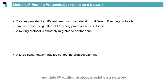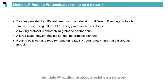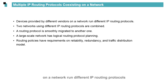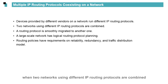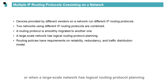In most cases, multiple IP routing protocols exist on a network. For example, when devices provided by different vendors on a network run different IP routing protocols, when two networks using different IP routing protocols are combined, when a routing protocol is smoothly migrated to another, or when a large-scale network has logical routing protocol planning — take a bank network, for example.